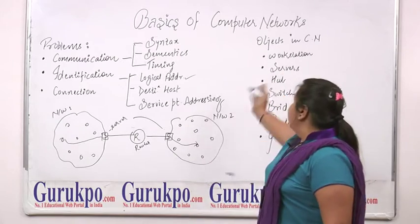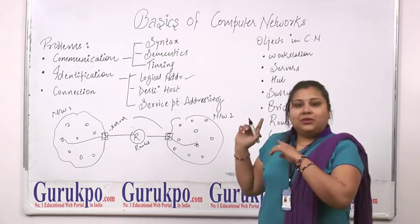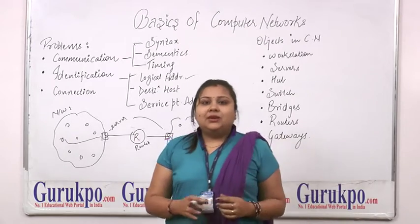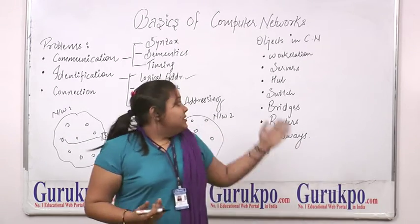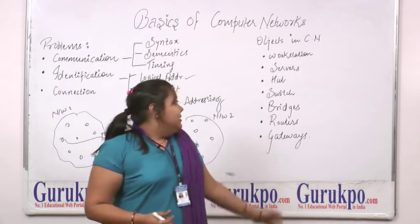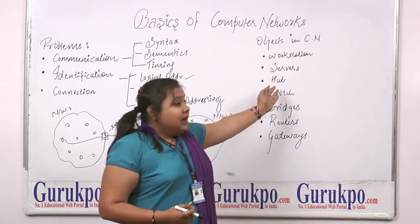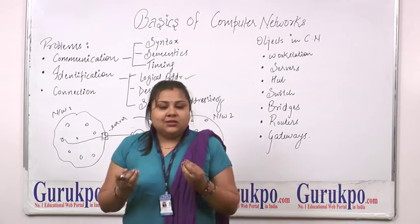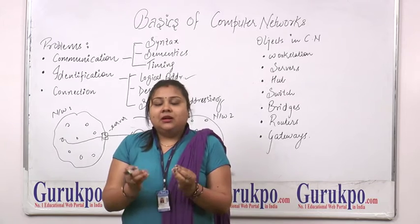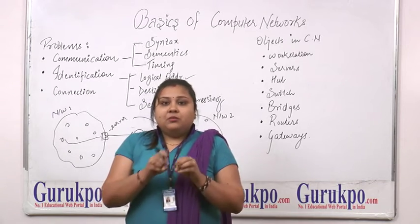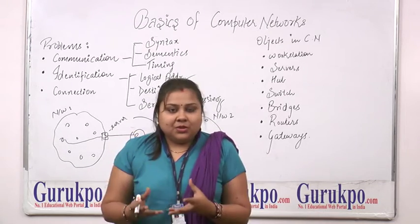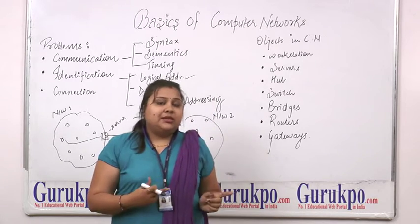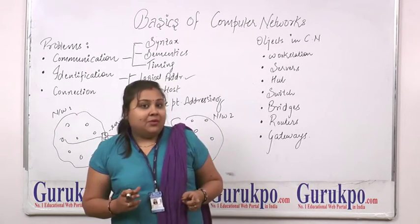Now, there are some objects in computer networks. The first one is workstations — we the clients. Then servers — the service providers. Then hubs. A hub is a non-intelligent passive device which is just used as a central device, which just broadcasts whatever message comes to it. It is non-intelligent and it is used at the physical layer of the OSI model.